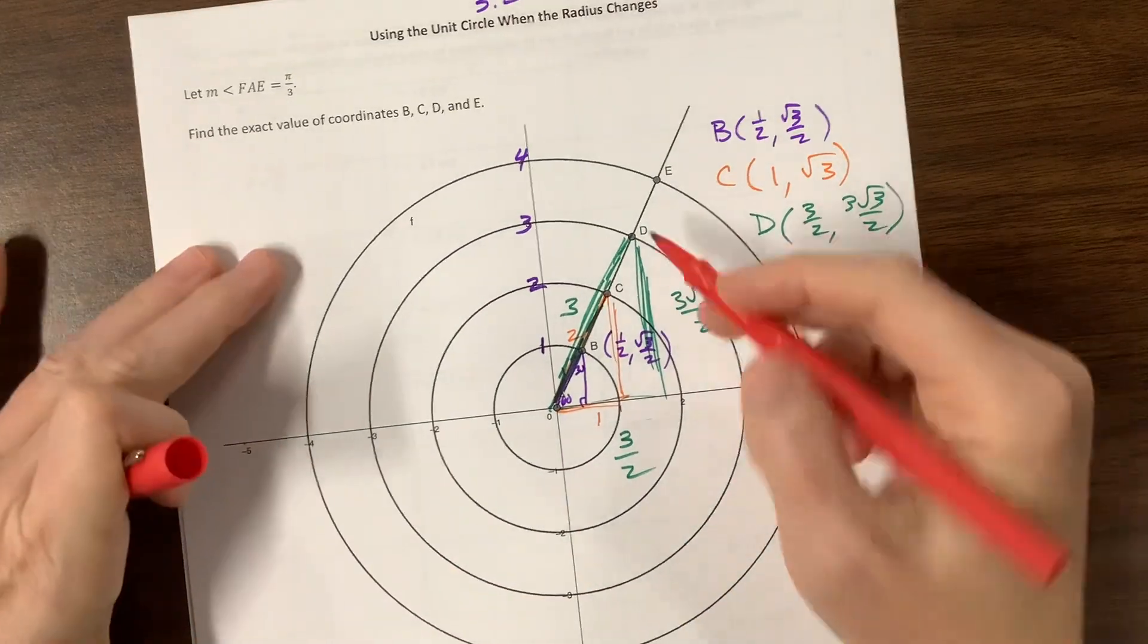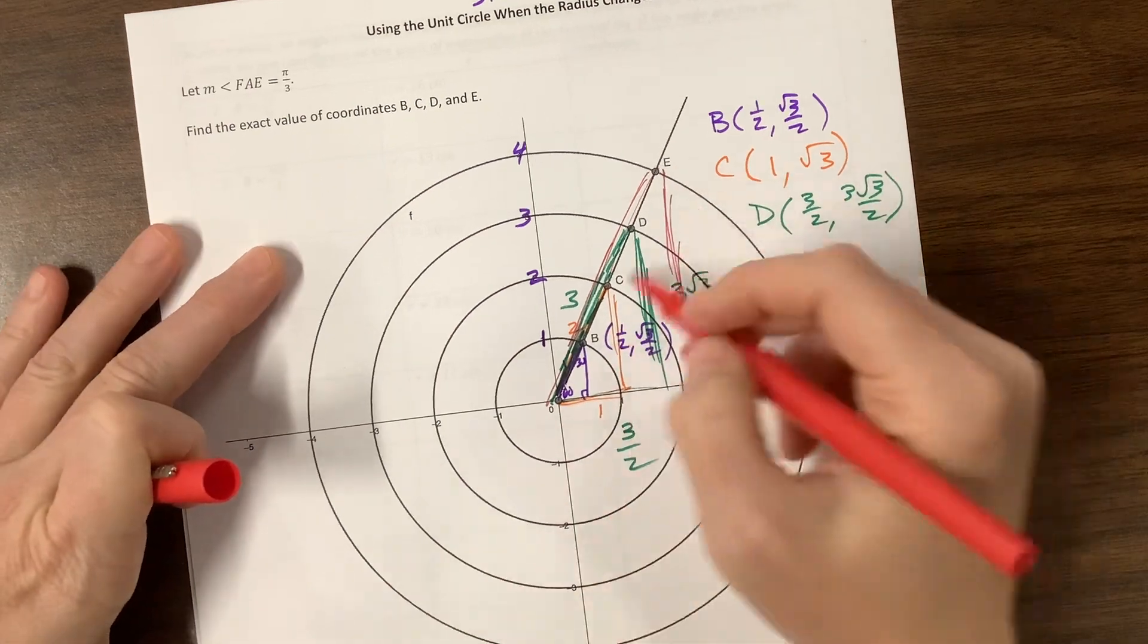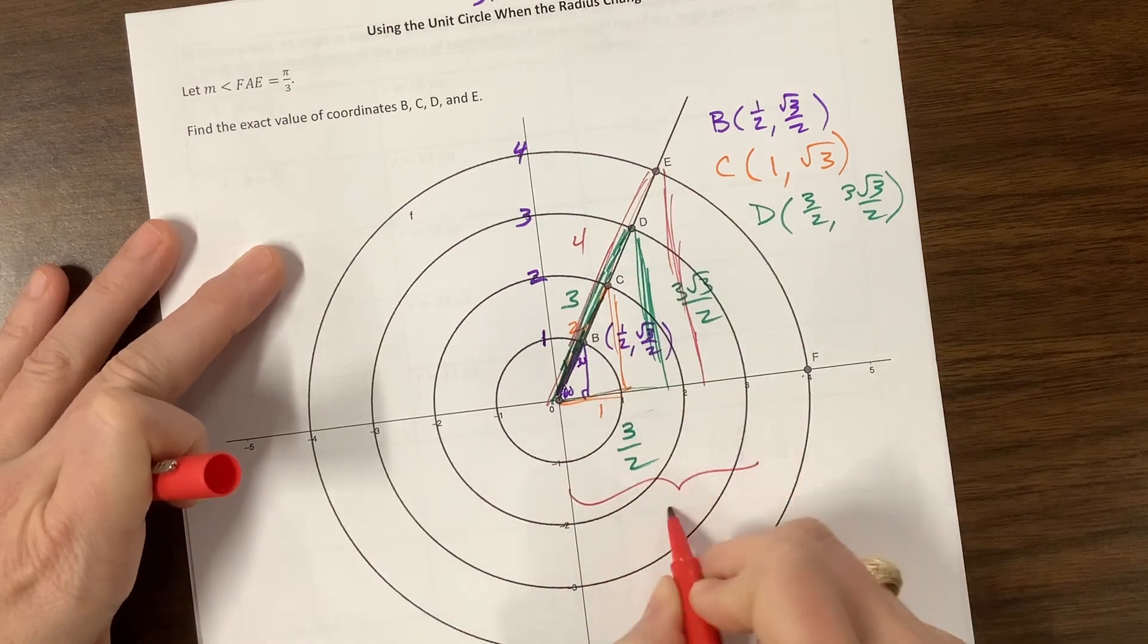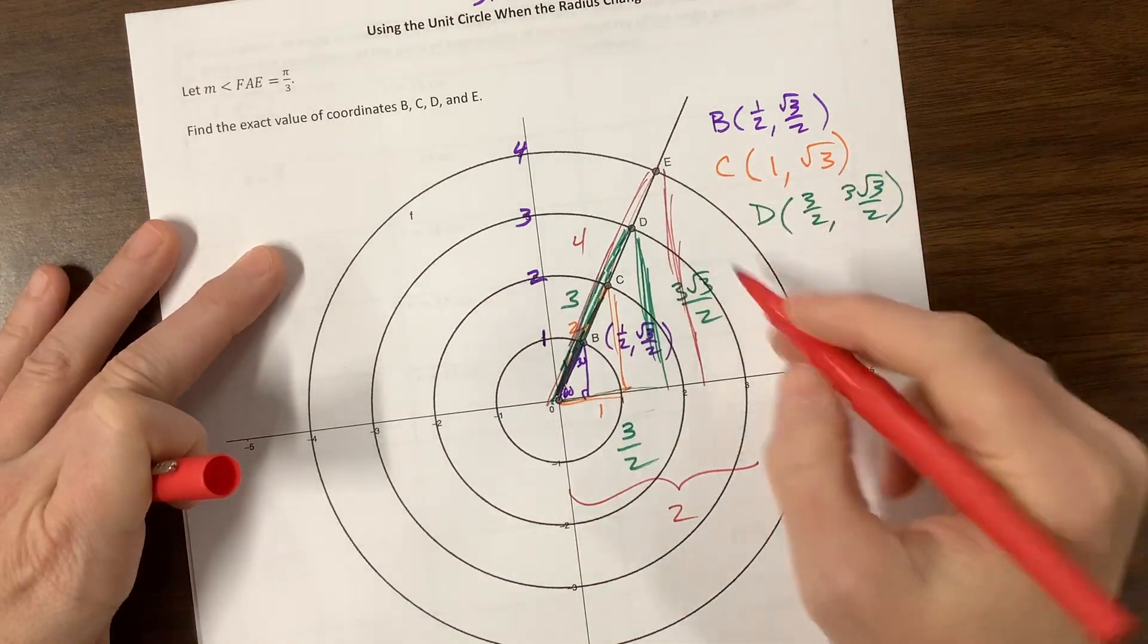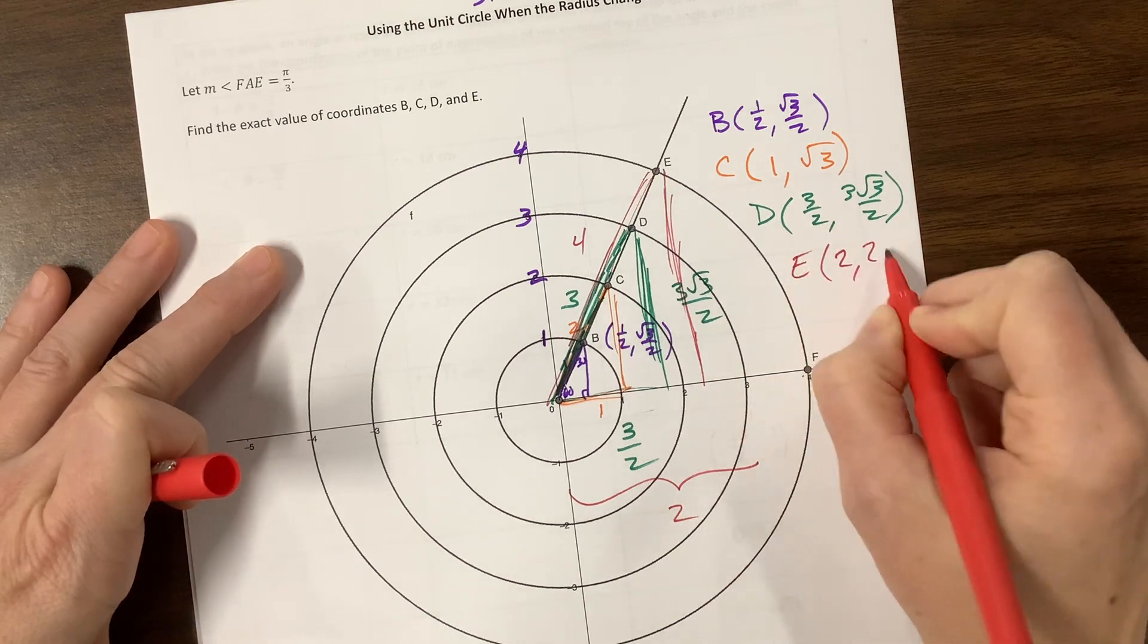Okay, last one, last color. Here comes E. We now have a radius of 4, which means opposite the 30 is now half of that, which is 2, and then this is going to be 2 times root 3, so our point E is the point 2 comma 2 root 3.